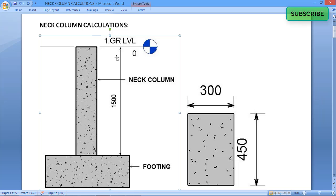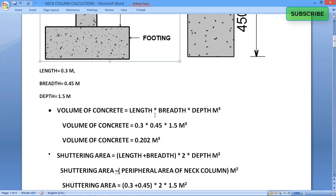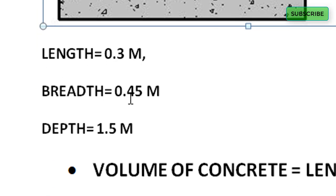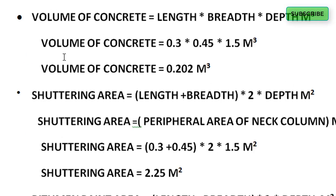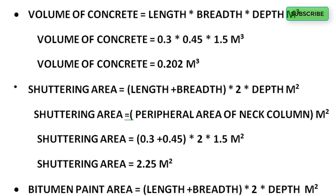The height of the neck column is 1500 mm. The width is 300 mm and the breadth is 450 mm. So the values in meters are: length 0.3, breadth 0.45, and depth 1.5 meters. The next column we calculate is the volume of concrete.